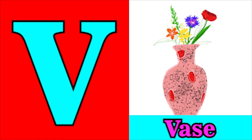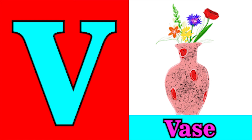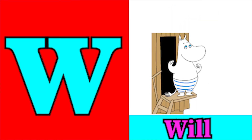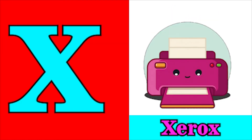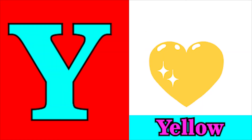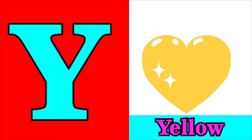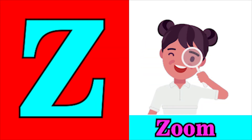V for vase, W for whale, X for zero, Y for yellow, Z for zoo.